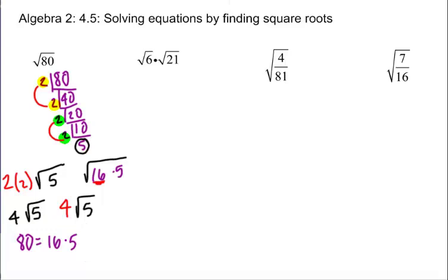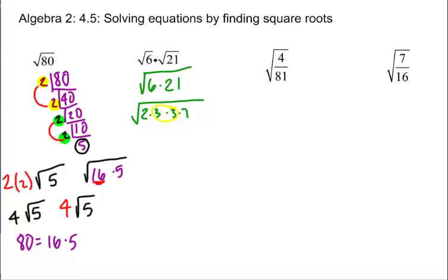Let's take the square root of 6 times the square root of 21. If I have the square root of 6 times the square root of 21, then I've got the square root of 6 times 21. Now, 6 is 2 times 3, and 21 is 3 times 7. What can I pull out? I can pull out those 3s. If I pull out one 3, I get 3 times the square root of 14.